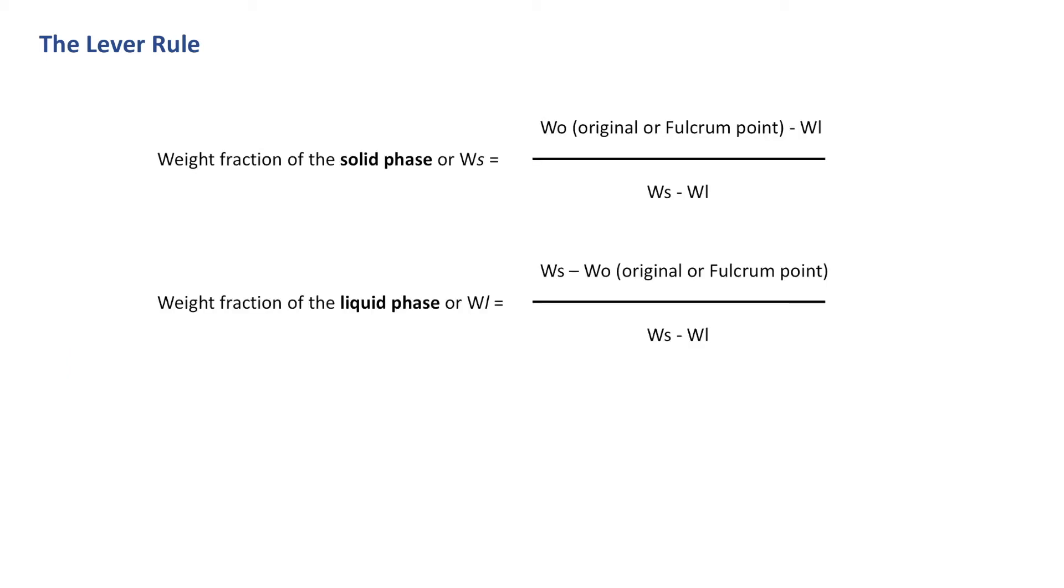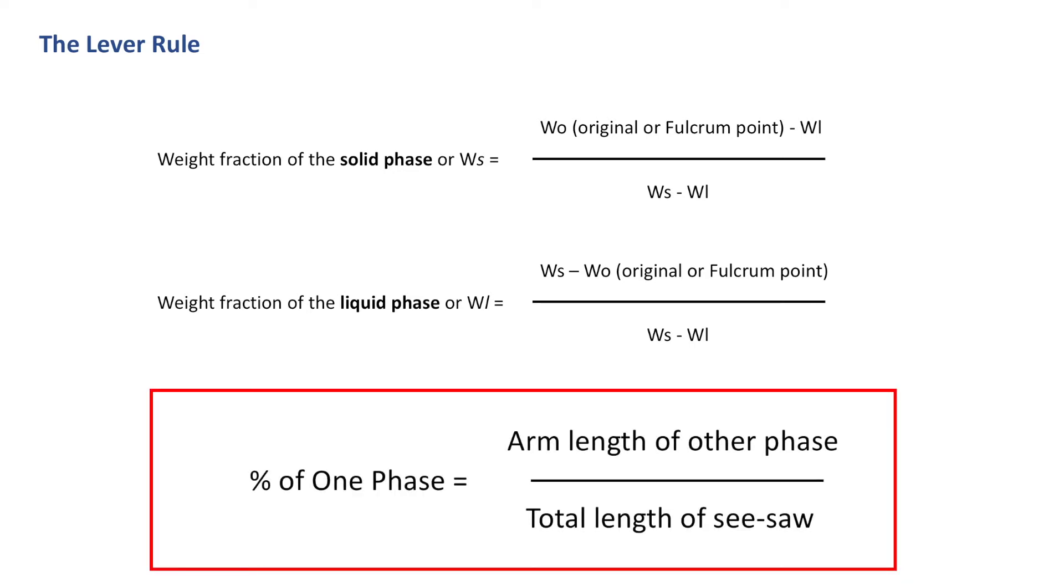These are the equations. At the top, this is how we determine the weight fraction of the solid phase, also known as w subscript s, and that is equal to the original weight minus the weight of the liquid over the weight of the solid minus the weight of the liquid. Below is how we calculate the liquid phase. In true essence, what we're doing is we're looking for the percent of one phase by measuring the arm length of the other phase over the total length of the seesaw.